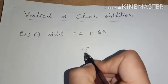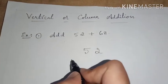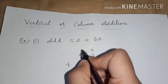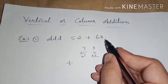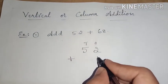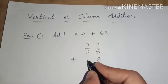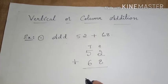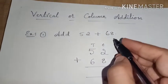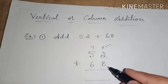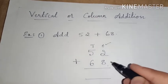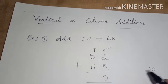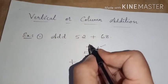Write 52 — the 2 goes in the ones place and 5 in the tens place. Next, write 68 below it — 8 in the ones place and 6 in the tens place. Always begin the addition from the ones place. So 2 plus 8 is 10. Write 0 in the ones place and carry 1 to the next place.